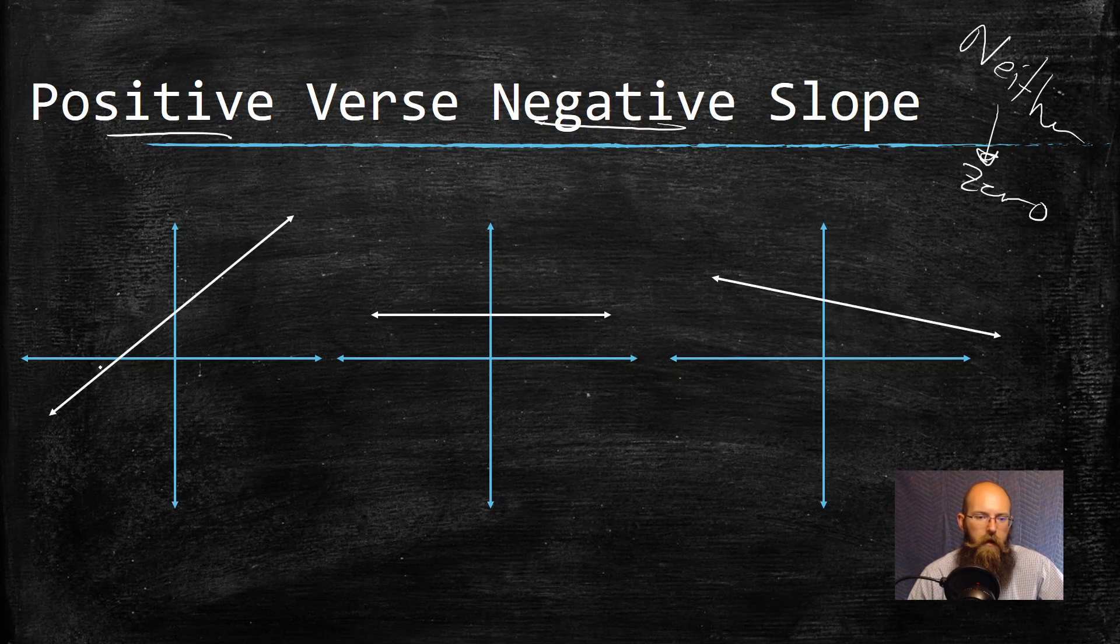So over on the left, see how I'm going up, right? Just like how I want my bank account to do. I want that money to go up. I want to get more of it. So this over here on the left is our positive slope.